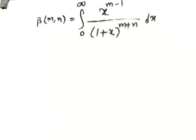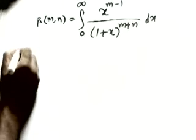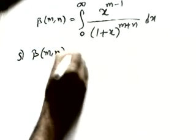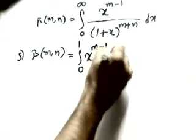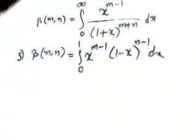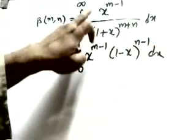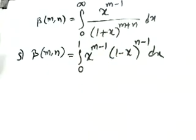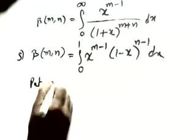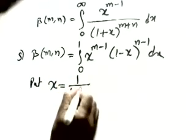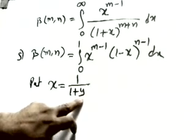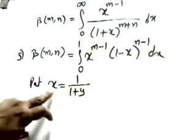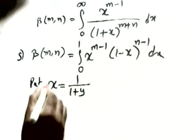The next proof: beta of m comma n equals the integral from 0 to infinity of x^(m-1) divided by (1+x)^(m+n). We start with the definition: beta of m comma n equals the integral from 0 to 1 of x^(m-1) times (1-x)^(n-1) dx. Since we want (1+x) in the denominator, the key substitution is to put x equals 1 divided by (1+y).